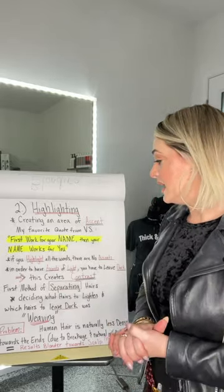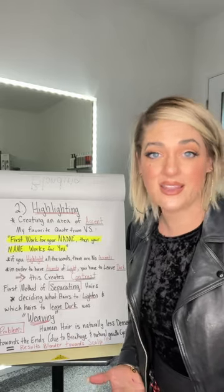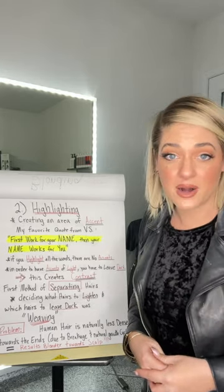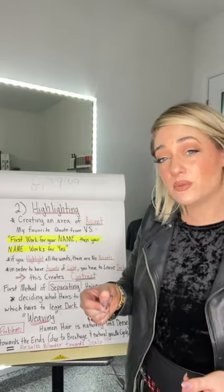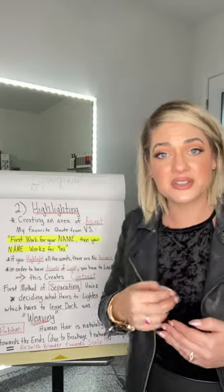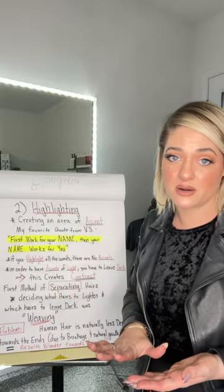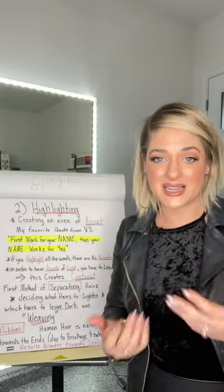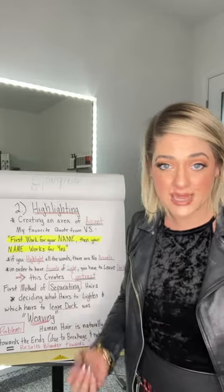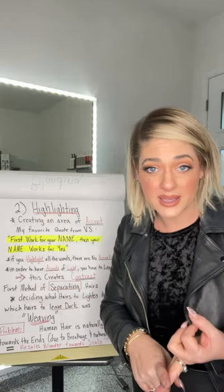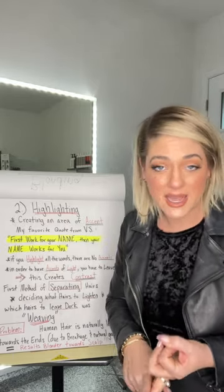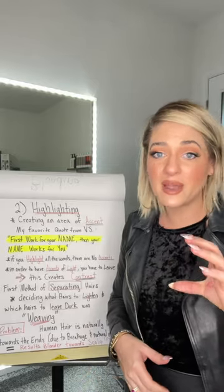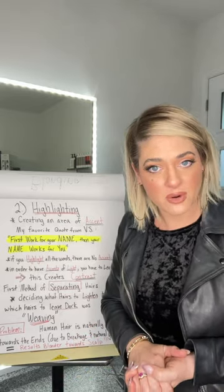This is what we consider creating contrast in the hair — creating areas of light and dark. The method of separating for a traditional highlight was done by physically weaving the hair, deciding what hair is to lighten and what hair is to leave dark. The problem with weaving is that hair is naturally denser at the scalp due to the growth cycle and breakage, so the ends are thinner. If you highlight evenly from roots to ends, the root area is going to be blonder and the ends darker and dingier.